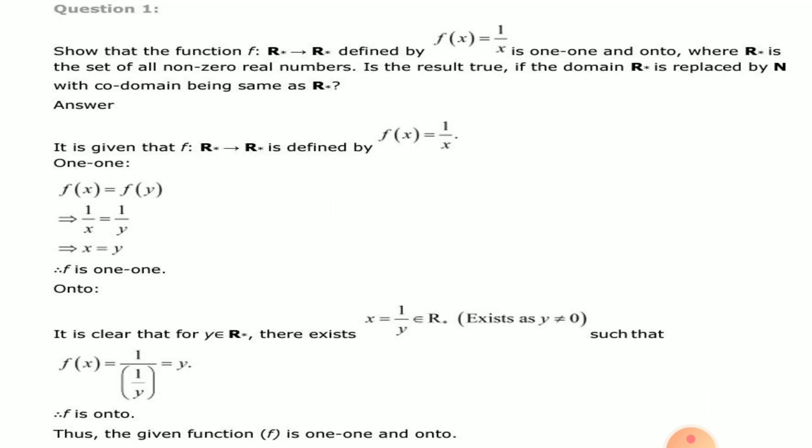Question number 1. Show that the function f from R* to R* defined by f(x) = 1/x is one-one and onto, where R* is the set of all non-zero real numbers. For every x, y belonging to R* (the domain), f(x) = f(y) implies 1/x = 1/y, therefore x = y. So f is a one-one function.